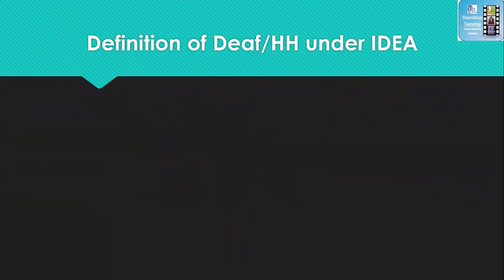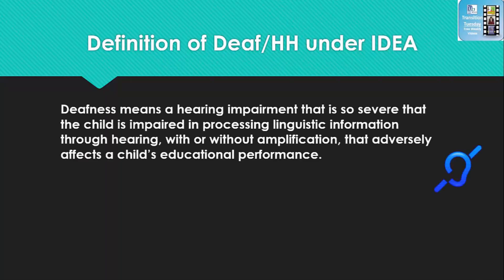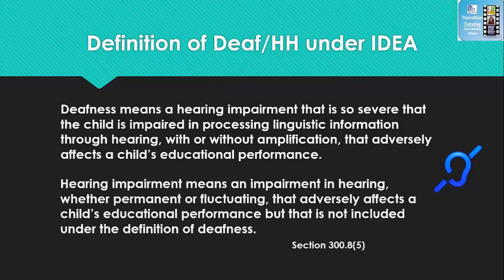Let's first talk about the definition of deaf and hard of hearing under IDEA. Deafness means a hearing impairment that is so severe that the child is impaired in processing linguistic information through hearing, with or without amplification, that adversely affects a child's educational performance. Hard of hearing means an impairment in hearing, whether permanent or fluctuating, that adversely affects a child's educational performance but is not included under the definition of deafness.